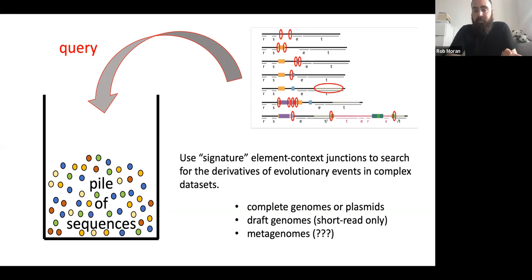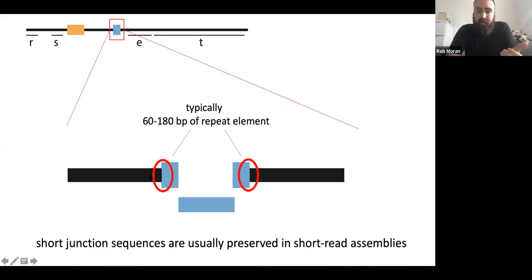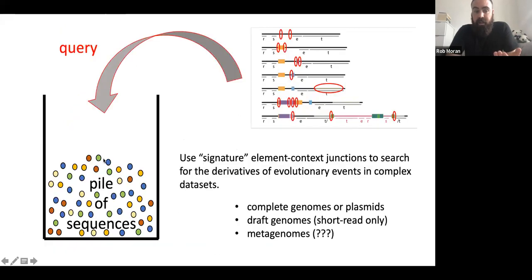If you were to imagine a lineage of plasmids with all these different events, you could have signature sequences for every molecular event that has occurred in that lineage over time. You can actually take those very short sequences. So I make them 100 base pairs, 50 base pairs of element, 50 base pairs of context, and query any set of sequences you like. You can query complete genomes and plasmids, you can query draft genomes, you may even be able to query metagenomes. In my experience of short read sequence data, when you have contigs break, you do still get a little piece of the genetic element that causes the break, or the repeat that causes the break. And that repeat length is usually 60 to 180 base pairs. So if you use 100 base pair signature sequence, that is 50 base pairs of element and 50 base pairs of context, that sequence should be preserved in your short read assemblies.